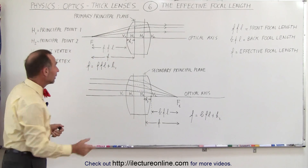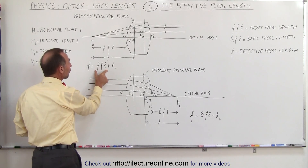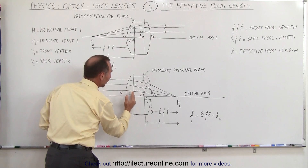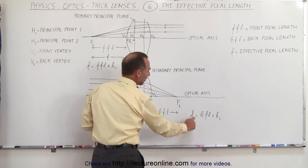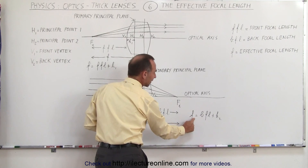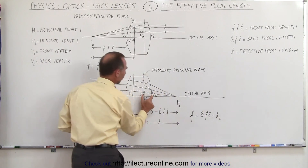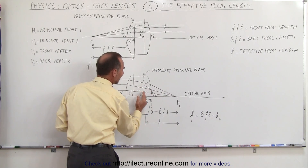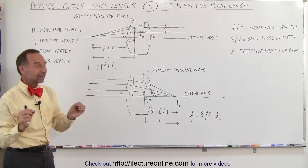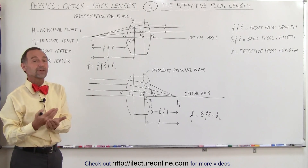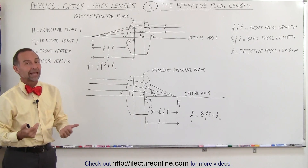So effectively, to find the effective focal length, we simply add the front focal length to the distance from the vertex to the primary or first principal point. And to find the effective focal length on the back side of the lens, we add the back focal length to h2, the distance between the back vertex and the secondary principal point. That's how we find the effective focal length, and that will essentially be the focal length to be used when dealing with thick lenses.